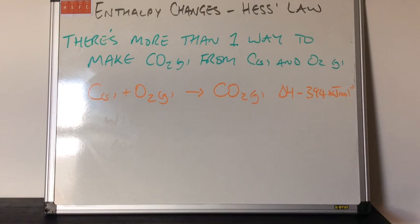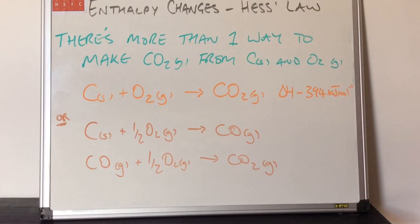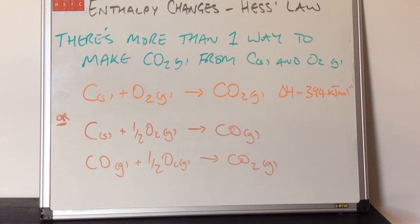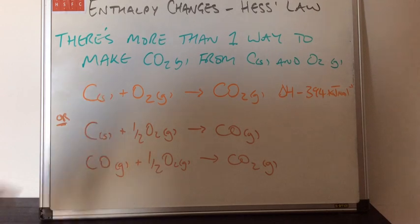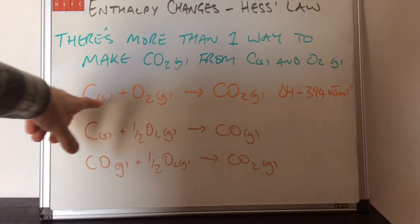The enthalpy change for that reaction is minus 394 kilojoules per mole. The other way is shown in brown — that's a two-step process. We start with one mole of carbon solid reacting with half a mole of O2 gas to make one mole of carbon monoxide gas. Then the second step is to take that carbon monoxide and react it with half a mole of O2 gas to make carbon dioxide gas.